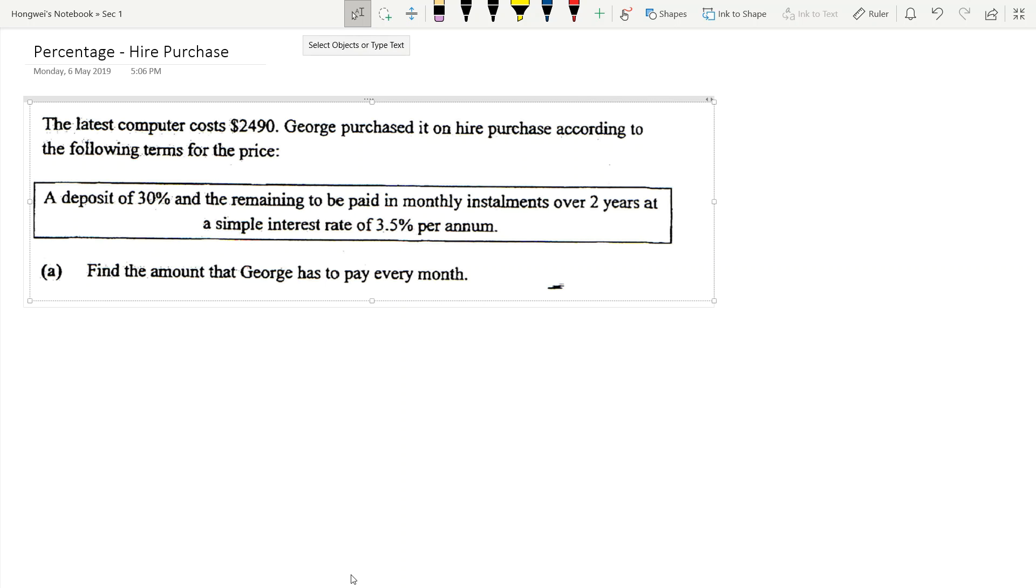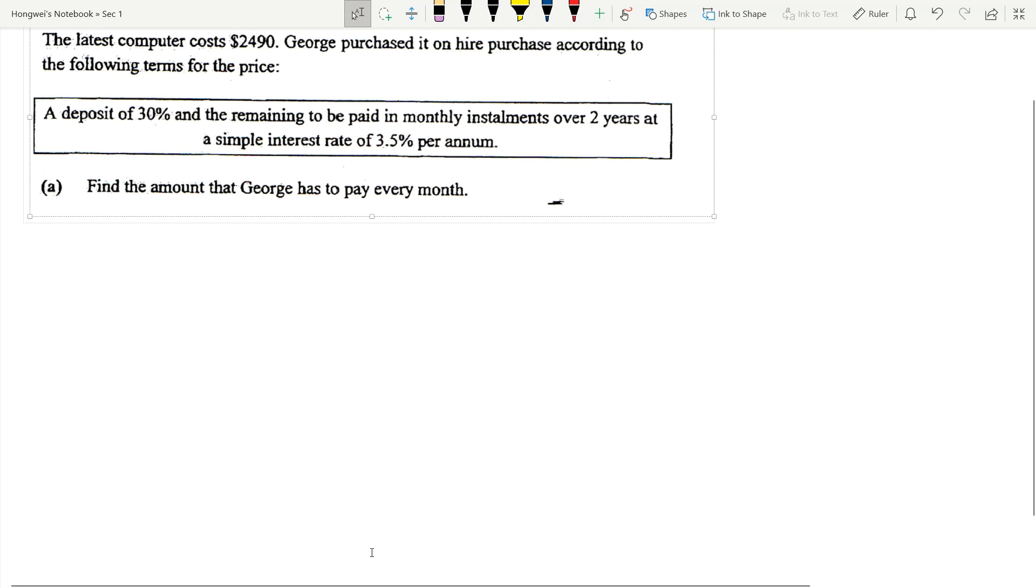Okay, a very important concept that you need to know in percentage is hire purchase. What does hire purchase mean? Hire purchase means buying something on installment. Nowadays you see a lot of things that say zero percent interest installment. Why is it like that? It's because when we want to buy something that is very expensive.